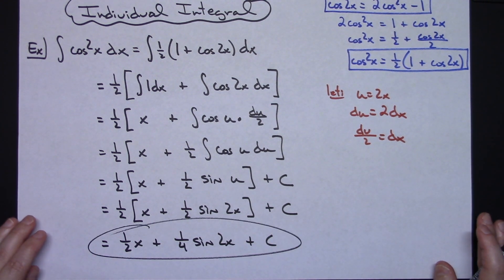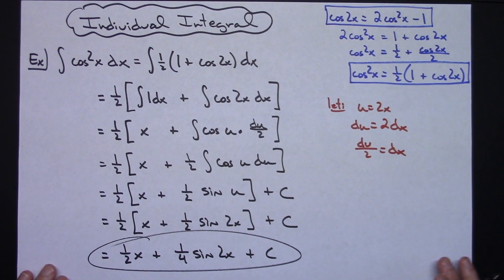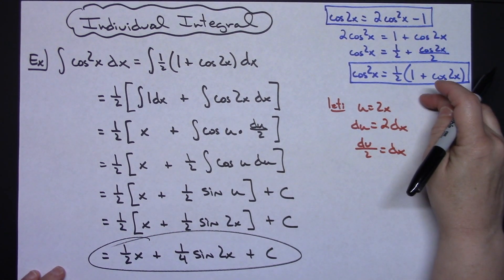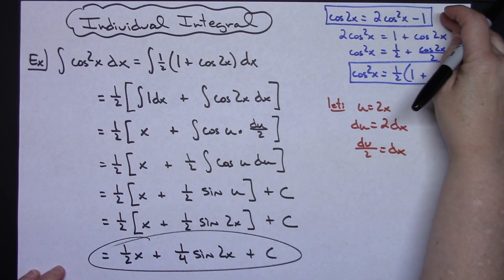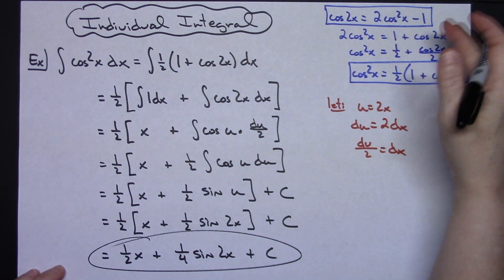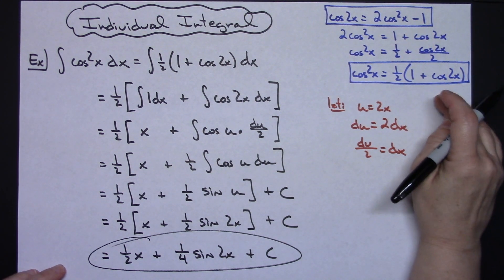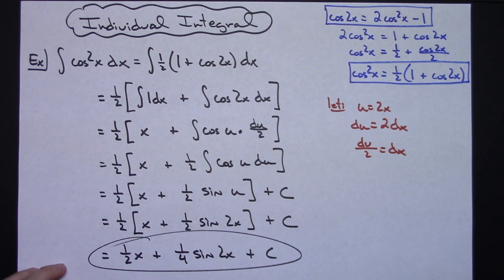So after you are able to get started with this substitution using these double angle formulas, these trig identities, and then manipulating it to something that is going to benefit you, it becomes a straightforward integration with a little u substitution right there.